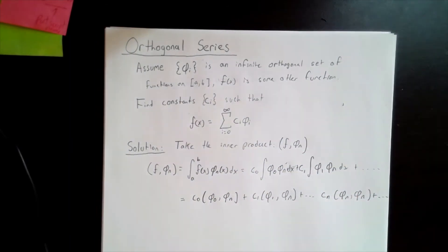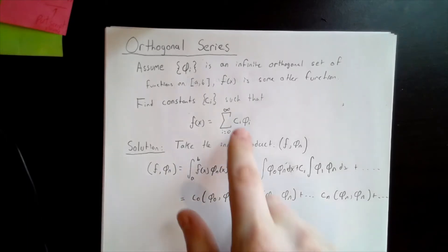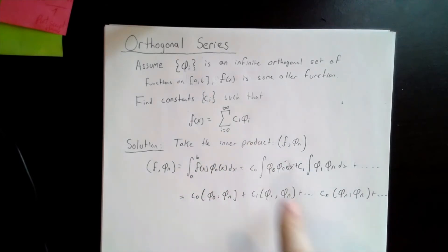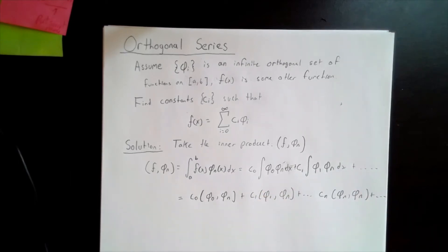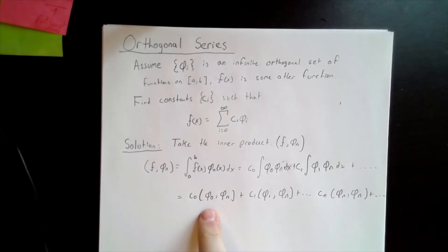Taking this inner product, we see that since we've assumed that we can write the function f of x as this infinite sum, we get an infinite sum of integrals where the constants c are out front. This sum of integrals is actually an infinite sum of the inner products of each member of the orthogonal set with the member phi i.